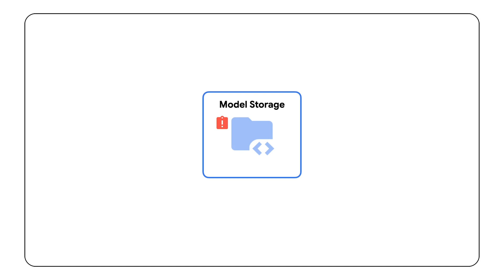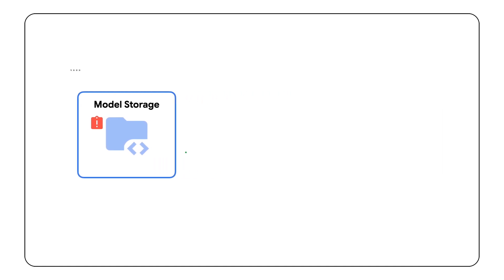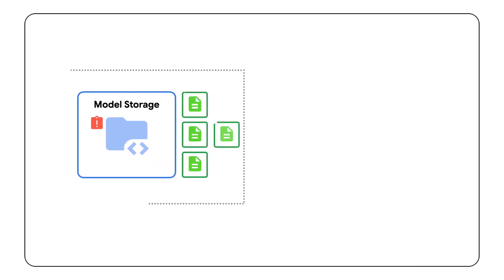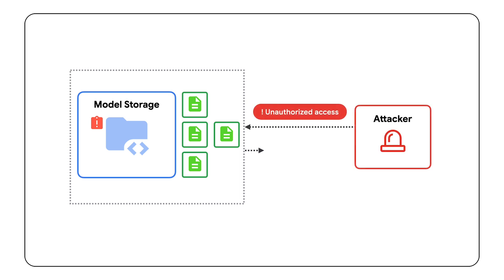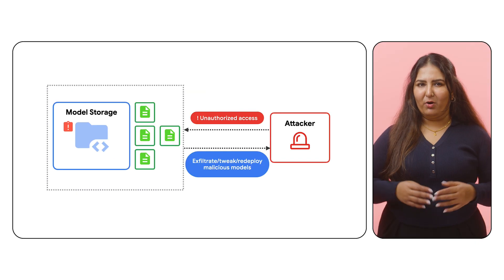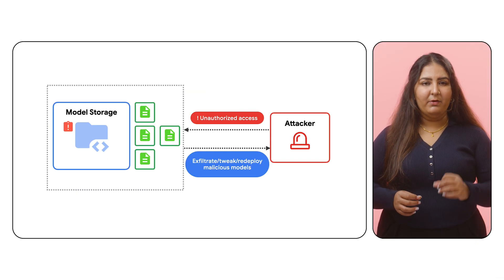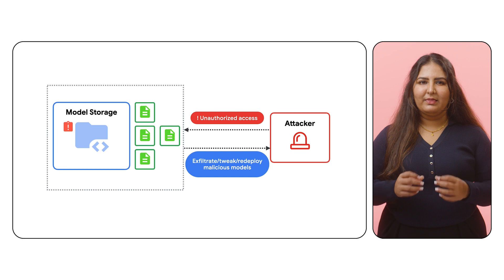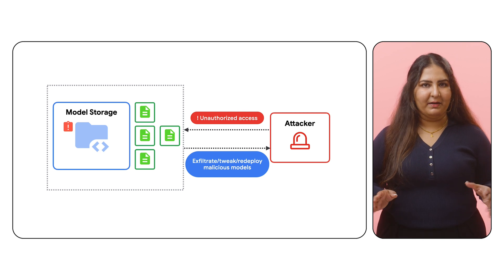Compromised model storage poses a significant security risk. If an attacker gains unauthorized access to your public or private repository, they could exfiltrate your models, tweak, and redeploy them with malicious code. This compromised model, if deployed in your environment without verification, could then poison the entire pipeline. It can corrupt the model predictions, or can serve as a backdoor to an attacker, granting access to sensitive production environments.